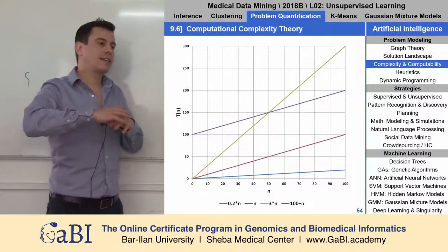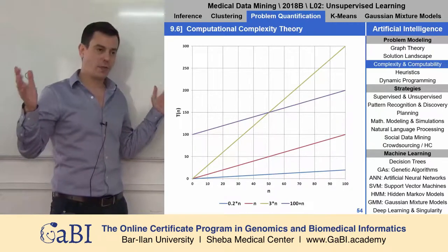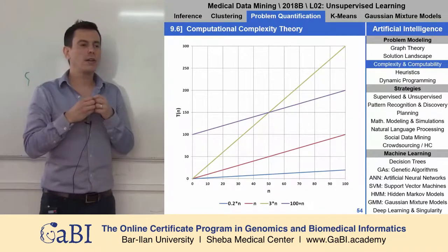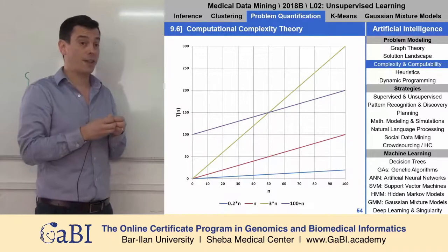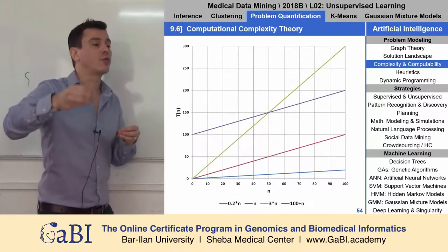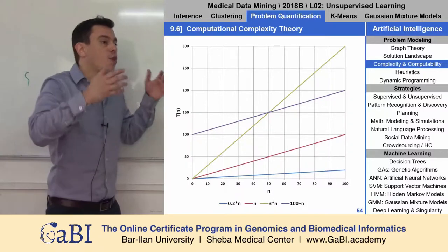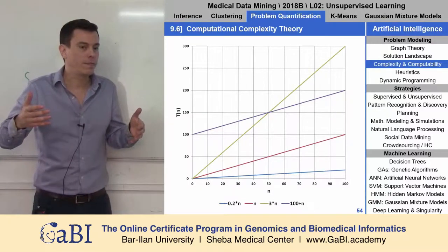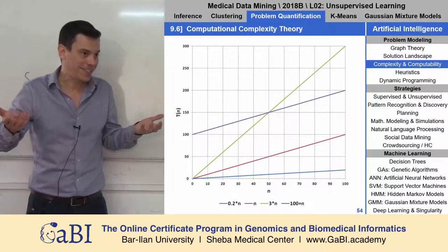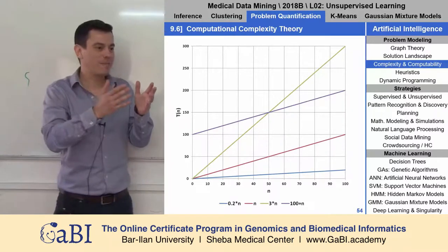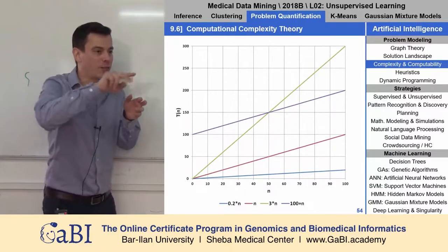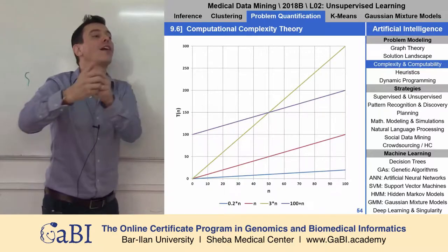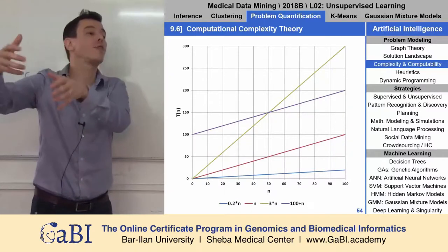If we have the heights of all n patients and we want to get the average height, how many calculations do we need? If we have 100 patients, we need to do 100 operations. If we have n patients, we need to do n operations.